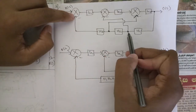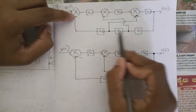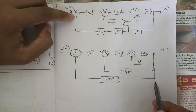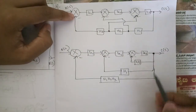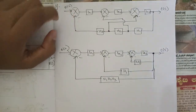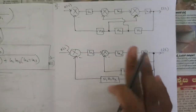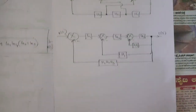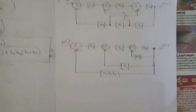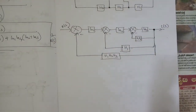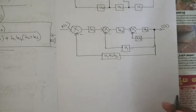If those two takeoff points were not there, these three would be in series, so I've written it as h1·h2·h3 and connected it to the same point. In this way I've simplified this block diagram. Now we are going to reduce it.